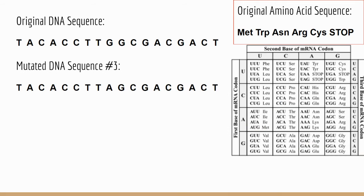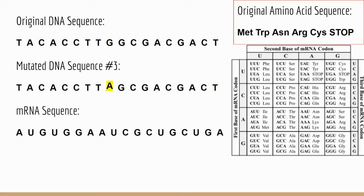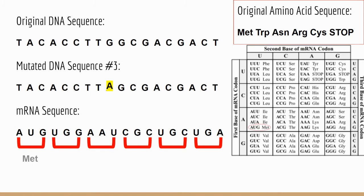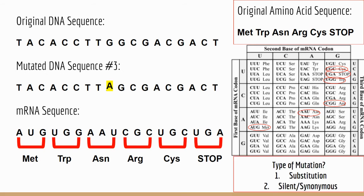Moving on to our third DNA sequence. We look closely and find the mutation occurred at this adenine right here — we only changed one base, so this is a substitution. And since guanine and adenine are both purines, this would also be a transition. We transcribe to our mRNA sequence, add our reading frame, and start translating. We compare that sequence against our original amino acid sequence in the top right corner and find that they're identical. Since nothing changed in the end, this is also a silent or synonymous mutation. In the box: substitution, silent, and synonymous mutation.